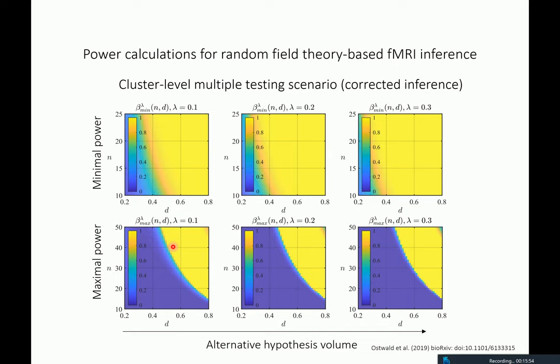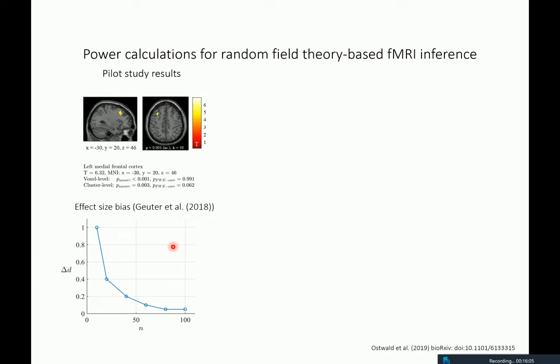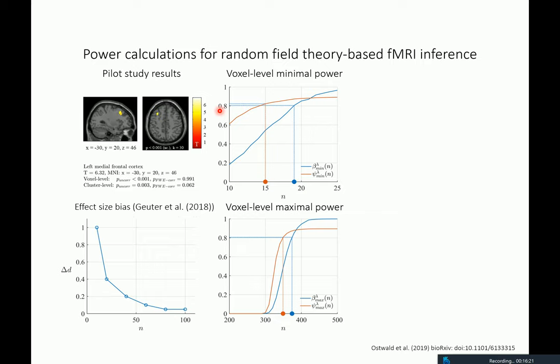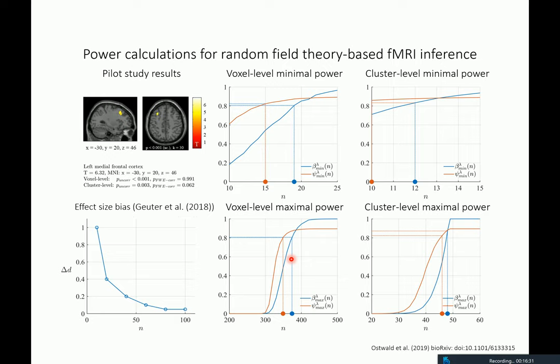These power functions are parametrically dependent on many things: the lambda parameter, the alpha level, the cluster-forming threshold, and the smoothness. As one example, we bias-corrected the effect size estimate from a pilot study cluster based on effect size estimates by Goethe et al. Asking how many participants are needed to achieve 80% power: at the voxel level, minimal power requires around 18, maximal power around 380; at the cluster level, minimal power around 12, and maximal power around 40 to 50.